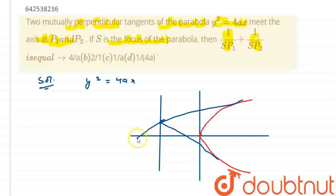So, they are cutting at the x-axis at two points, I am taking p1 and p2. So, this equation is y square is equal to 4ax. Now, we require the equation for the tangent, the two tangents which are mutually perpendicular. So, let me assume the two points be at1 square comma 2at1 and the another point is at2 square comma 2at2.